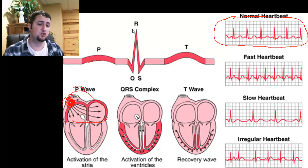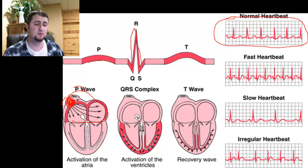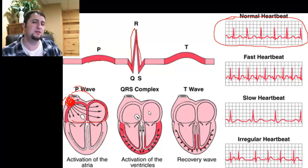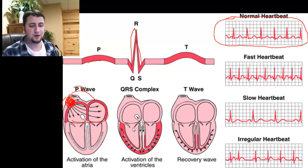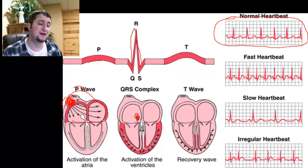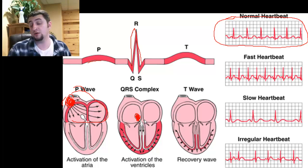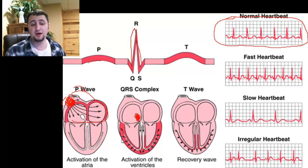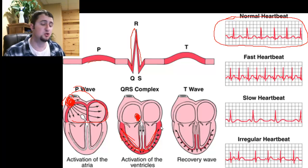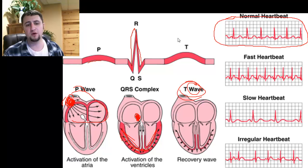The next thing here is what we call the QRS complex, and it is when the ventricles are firing — contraction of the ventricles. Once the signal from the SA node goes down to the atrioventricular node or AV node, it causes both ventricles to contract. And then finally the T wave is more of a resting phase.